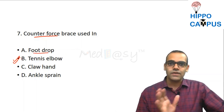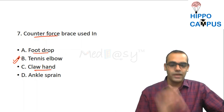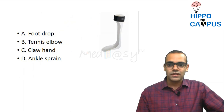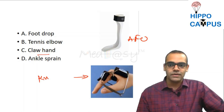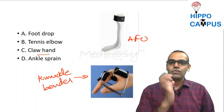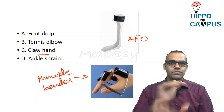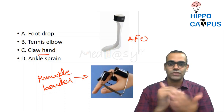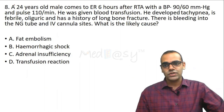For foot drop, we use the ankle foot orthosis (AFO) or foot drop splint. For claw hand, we use the knuckle bender splint because in claw hand there is clawing, and we need to counter it by bending the knuckles — hence the name knuckle bender splint.